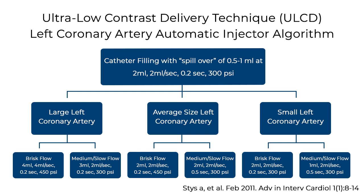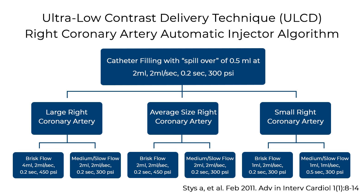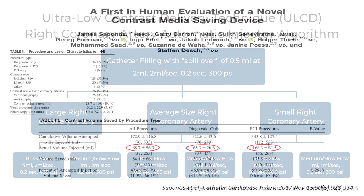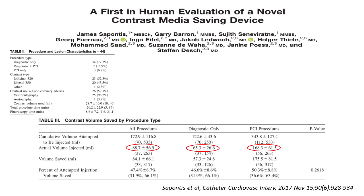These techniques have allowed us to give ultra-low amounts of contrast per patient per procedure, and these numbers are the lowest reported in literature. For example, we can perform coronary angiography with 10 to 20 cc's of contrast, and then percutaneous intervention can follow with another 10 or 20 cc's. Other studies and devices used to preserve contrast have not reported as low numbers — they deliver two or three times the amount of contrast per procedure compared to ours.